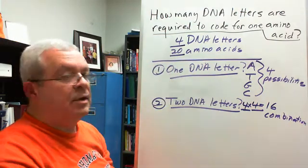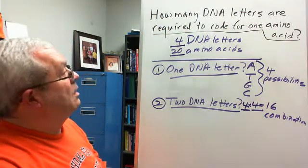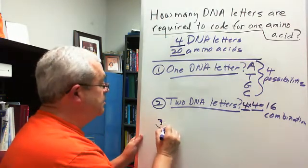Well, that's a big jump from just four. Is it a big enough jump? How many things do we have to code for? Twenty amino acids. Oh my goodness. Well, let's try the next step up.